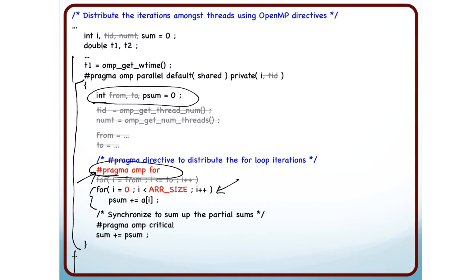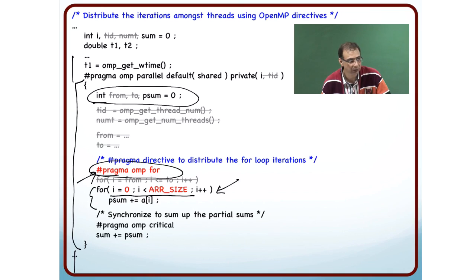And then you write your code normally as you do. Some things are implicit over here, like I am working on i equal to 0 to i is less than array size. So I am not doing any division, I have just written it as a normal loop. OpenMP will take care of dividing this loop.